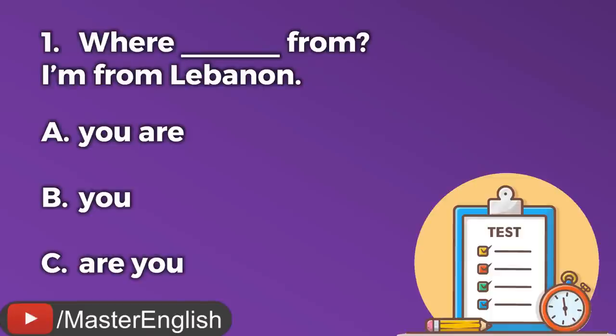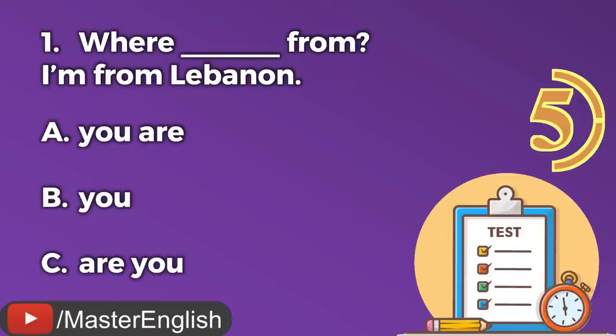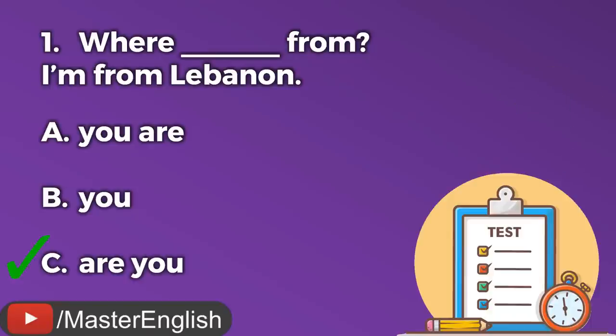Choose the correct answer. Question number one. Where ___ from? I'm from Lebanon. A: Where you are from? B: Where you from? C: Are you — Where are you from? The correct answer is C: Where are you from?